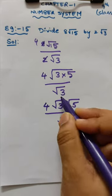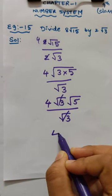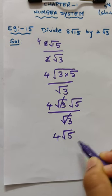4, root 3, root 3 cancel. So final answer: 4 root 5.